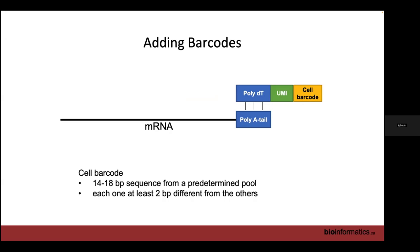We then have our cell barcode — a 14 to 18 base pair sequence, depending on the technology and version you're using. These are predetermined pools of sequences deliberately generated so that each one is at least two base pairs different from any other. This allows error correction because sequencing is not perfect. A sequencing error in a cell barcode is a big problem — a read from a T cell could be assigned to an endothelial cell. So we aggregate barcodes that are one base pair different from each other into one cell, knowing that difference is just a sequencing error.